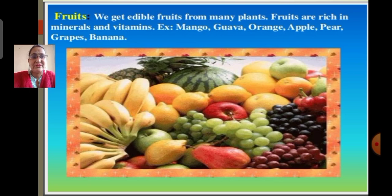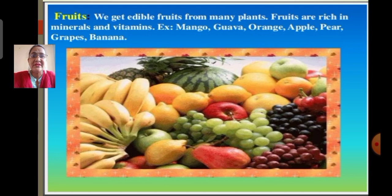Next are all fruits. Fruits are a part of the plant, and we eat all fruits like mango, guava, orange, apple, pear, grapes and bananas. We eat edible fruits from many plants. Fruits are rich in minerals and vitamins, as discussed in part 1.